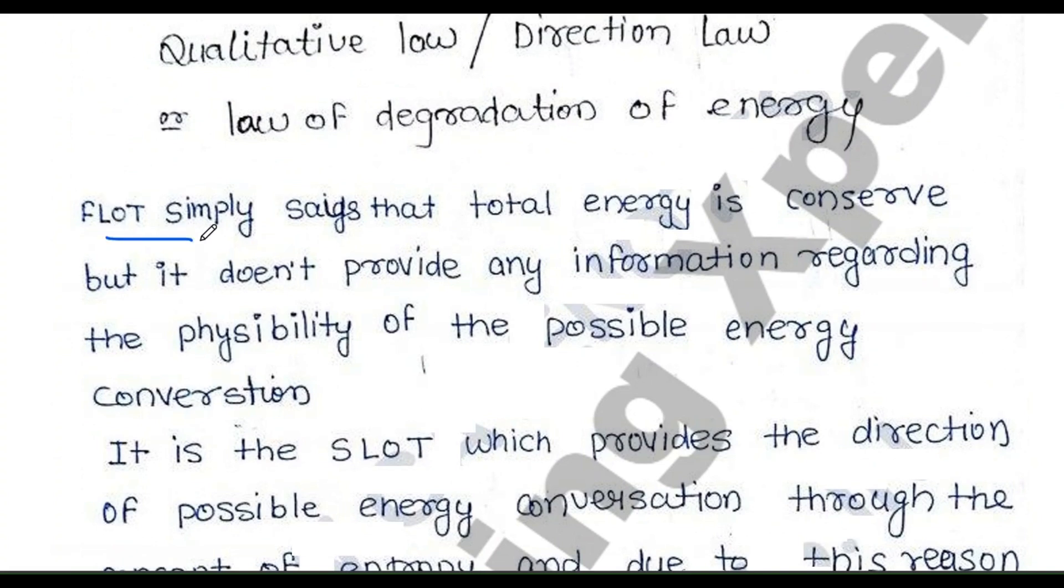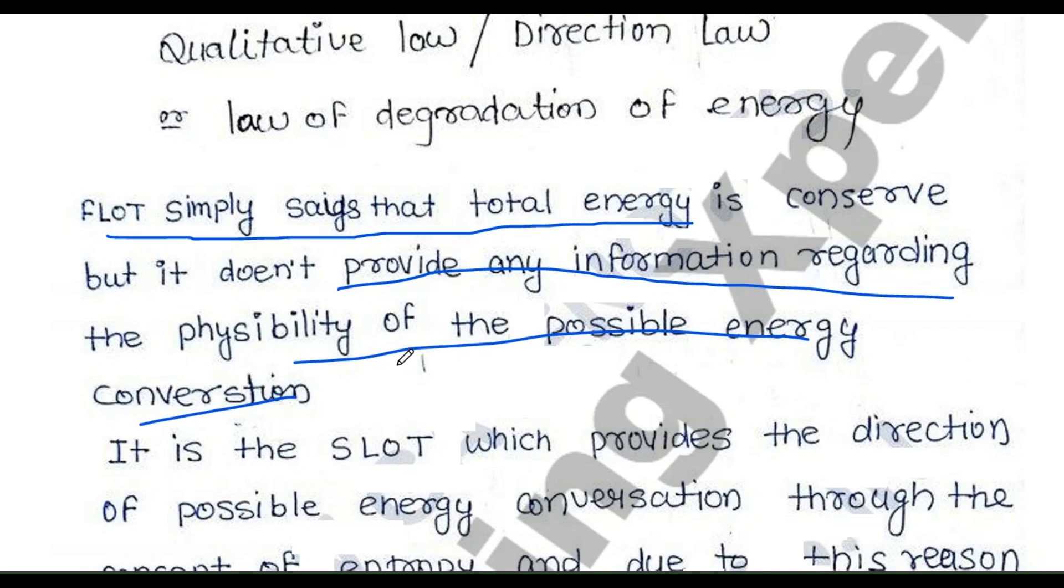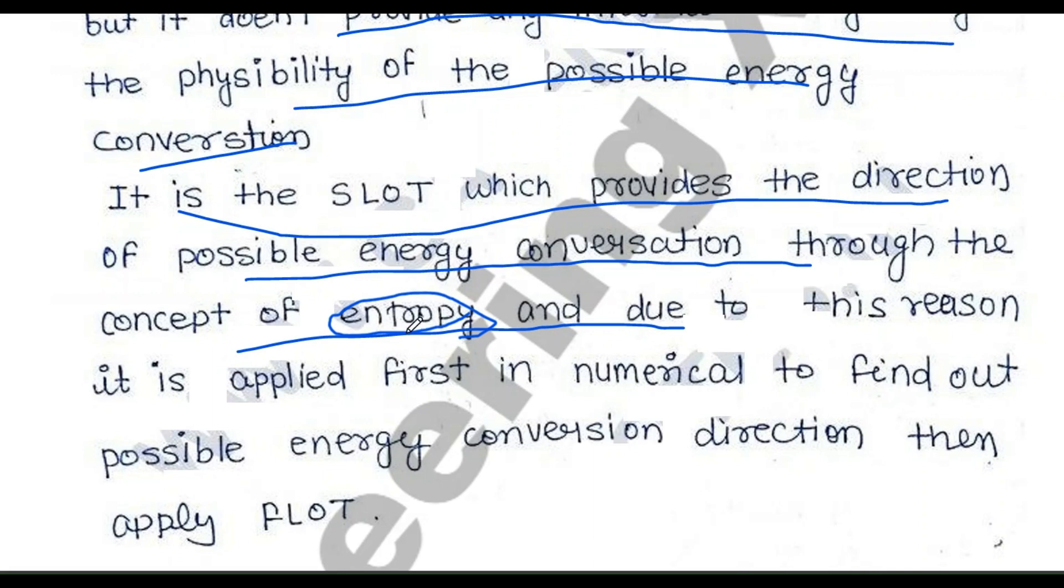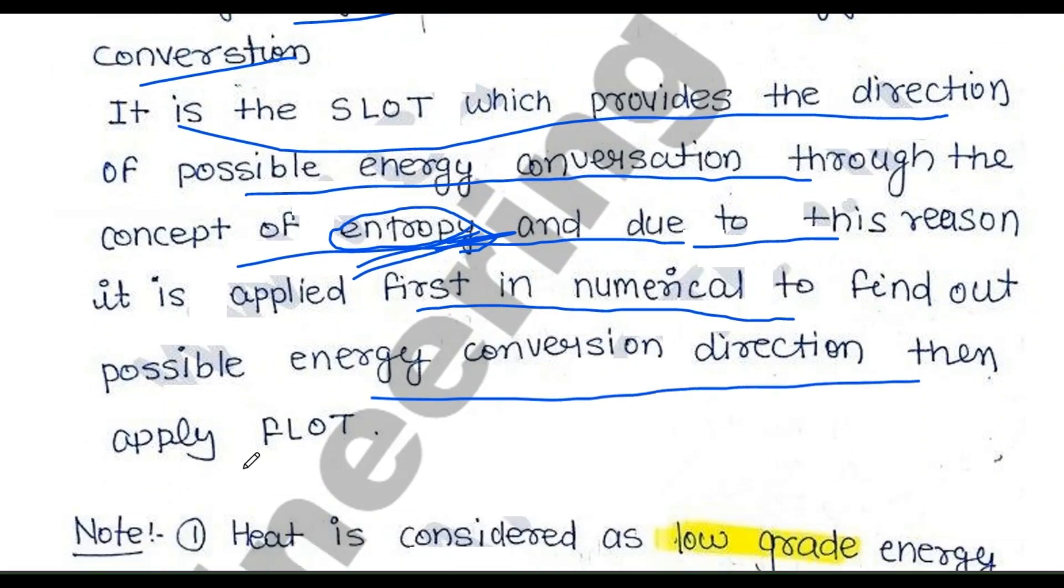The First Law of Thermodynamics says total energy is conserved, but it doesn't provide any information regarding the feasibility of possible conversion. The Second Law of Thermodynamics provides the direction of possible energy conversion through the concept of entropy. This is a new concept in this lecture - the Second Law is basically about entropy. Remember this term. The Second Law is applied first to find out the possible energy conversion direction, then the First Law.